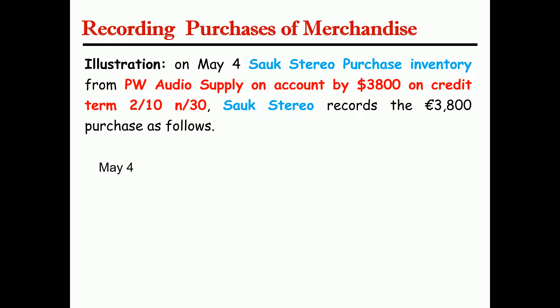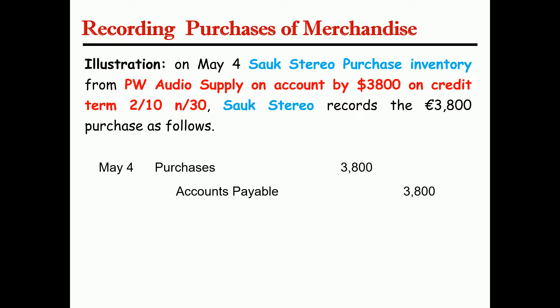Assume a purchasing of inventory from PW Audio Supply on account, with a credit term of 2/10, n/30, which means a 2% discount if paid within 10 days. In the periodic inventory system, you debit the purchase account and credit accounts payable or cash. In the perpetual inventory system, the inventory account is updated at the time of purchase.